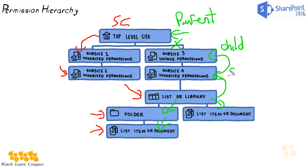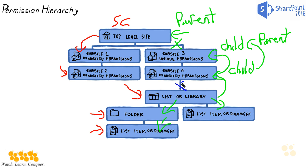The top level site becomes a parent and sub site three becomes a child. Sub site four is also a child, which makes sub site three a parent as well — because of the inheritance process, that traverses all the way down through the permission hierarchy. If anywhere along this hierarchy you break the permission strategy again, such as underneath sub site four down to list or library, then those individual documents, folders, and list items will now inherit from that new level instead.